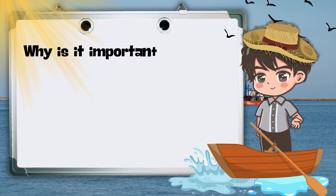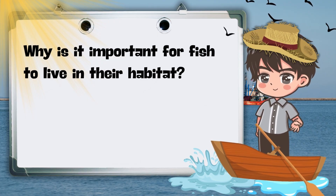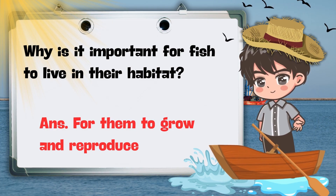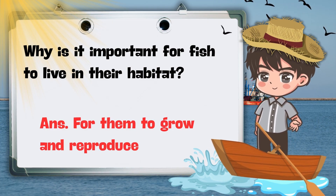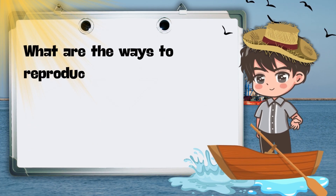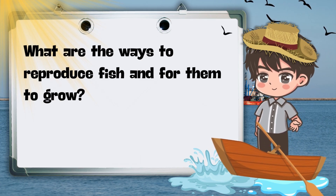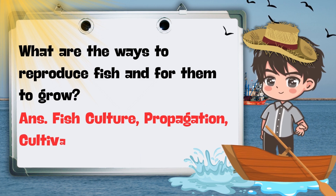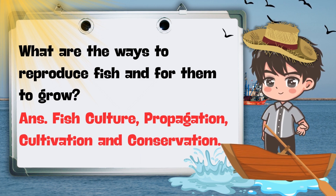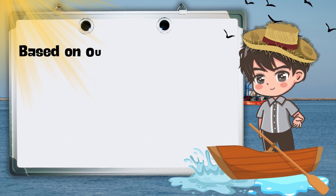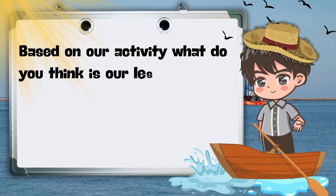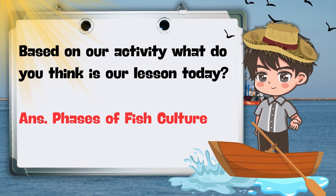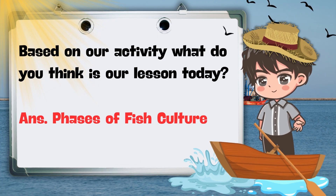And why is it important for fish to live in their habitat? Very good — for them to grow and reproduce. And what are the ways to reproduce fish and for them to grow? Very good — the ways are fish culture, propagation, cultivation, and conservation. And based on our activity, what do you think is our lesson today? Very good — our lesson for today is the phases of fish culture.